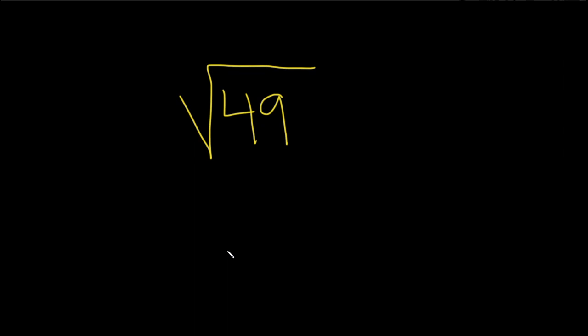In this problem we're going to evaluate the square root of 49. So first note, if you take 7 and you square it, you get 49.